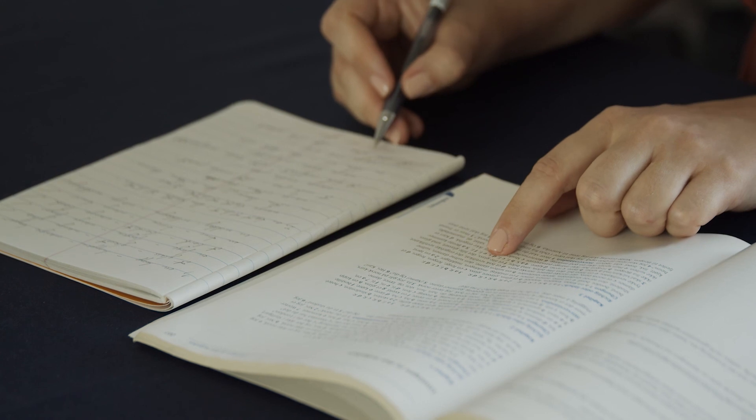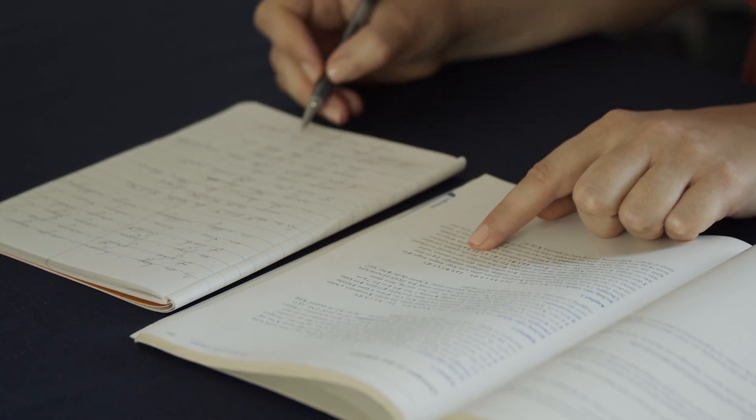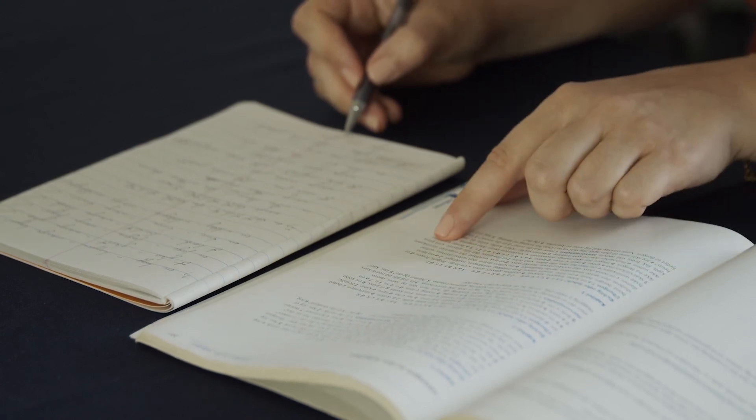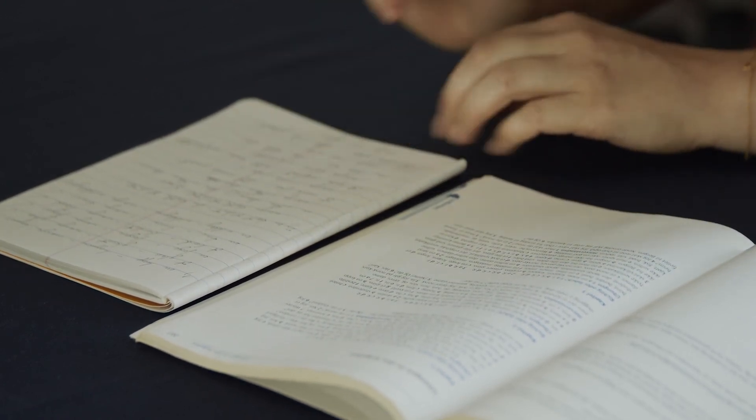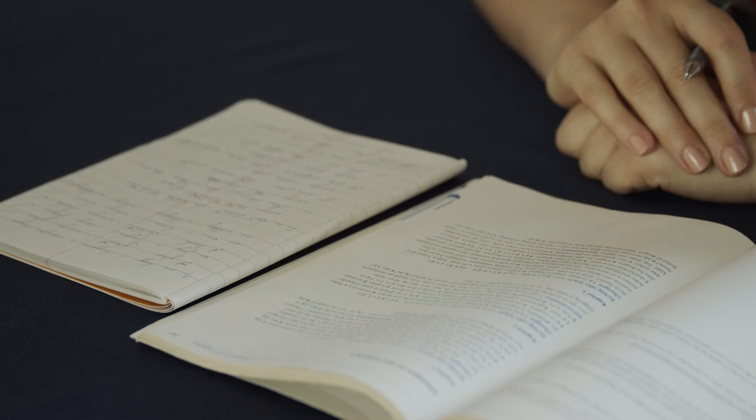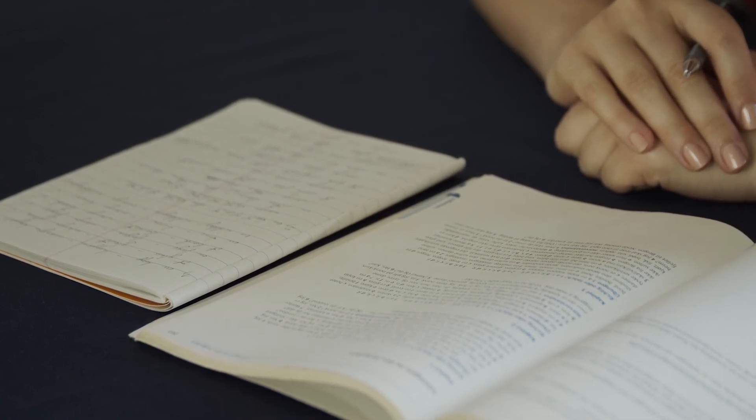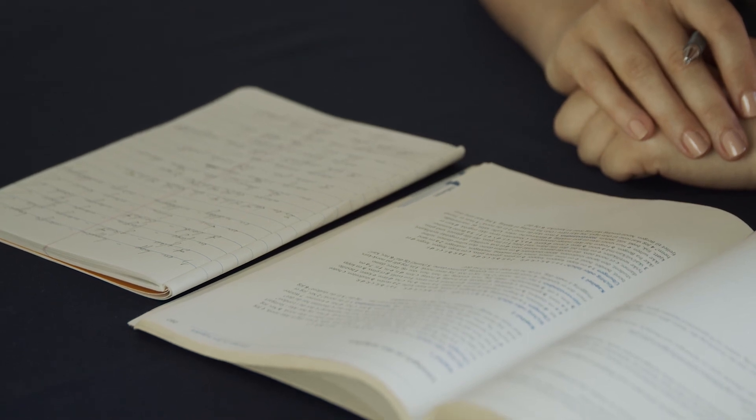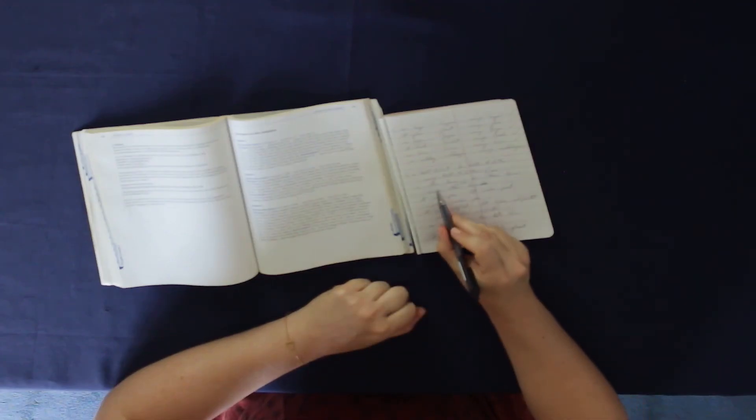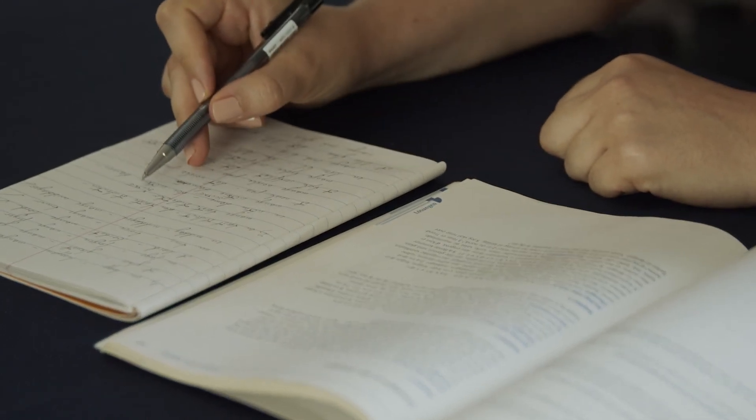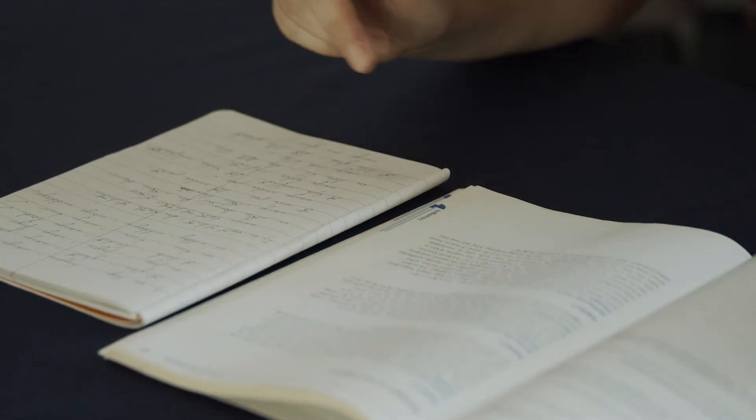Et lite glass, det lille glasset, and små glass. All right. I think that wasn't too bad. So one thing that I need to remember is that sulten becomes sultne. Hungry. It's an important word.